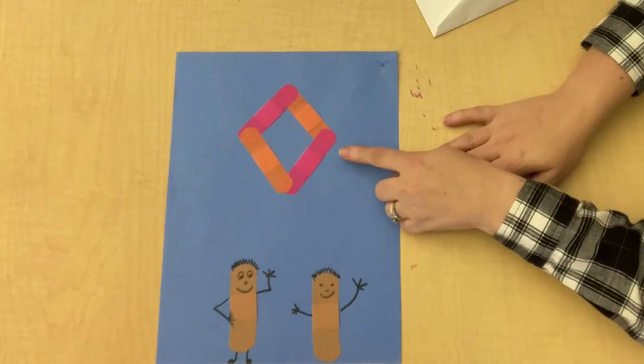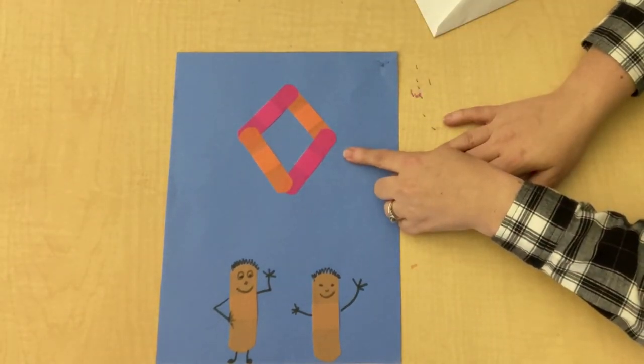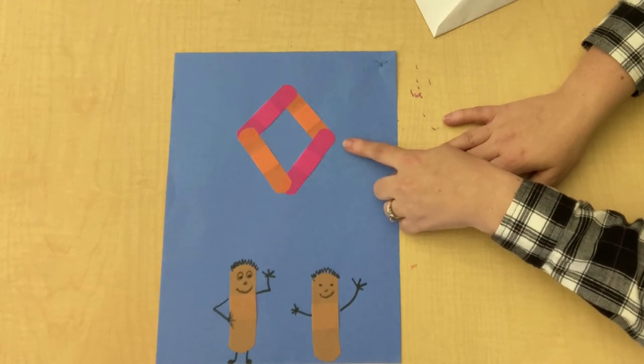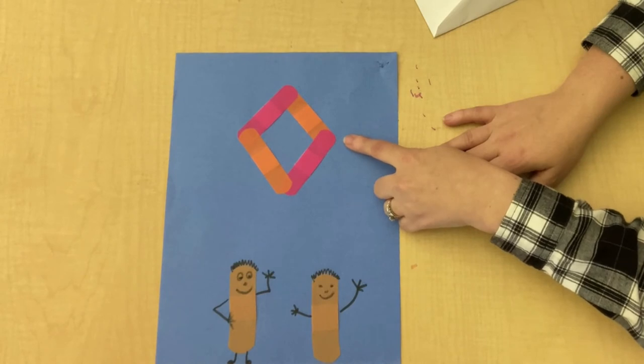Okay, does anybody know what shape I made with my band-aids? I made a rhombus. If you said diamond, you're also right. Rhombus is another name for our diamond.